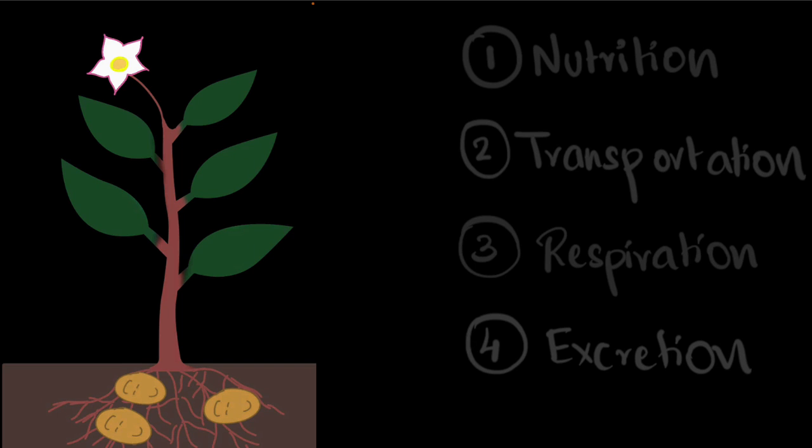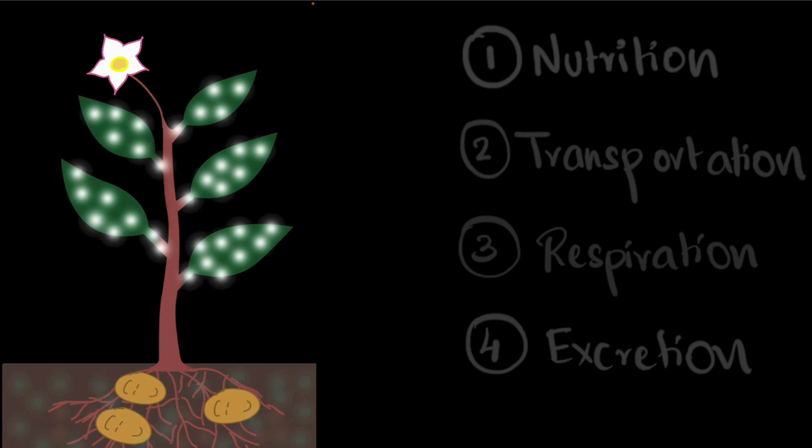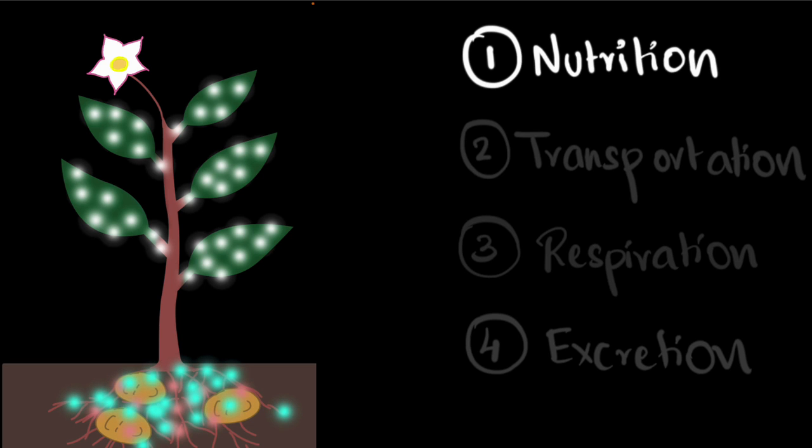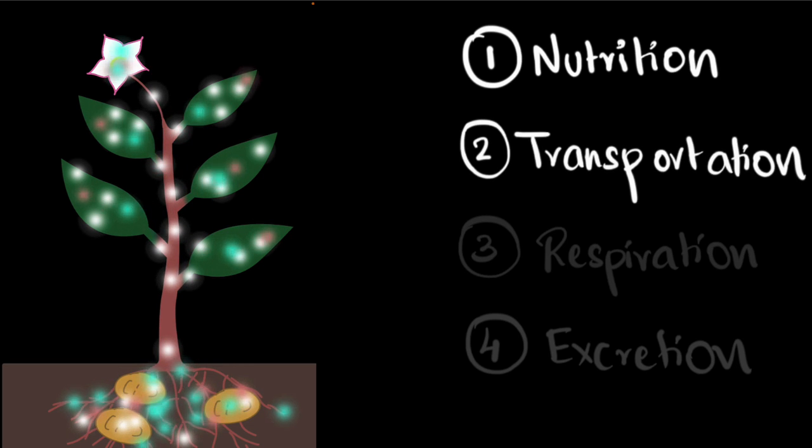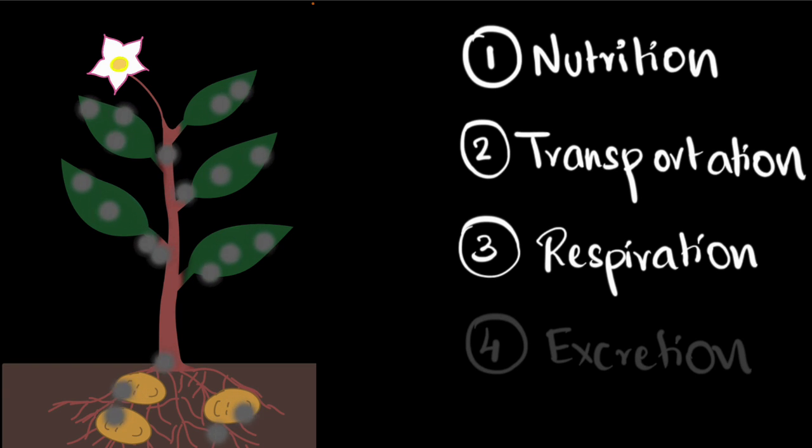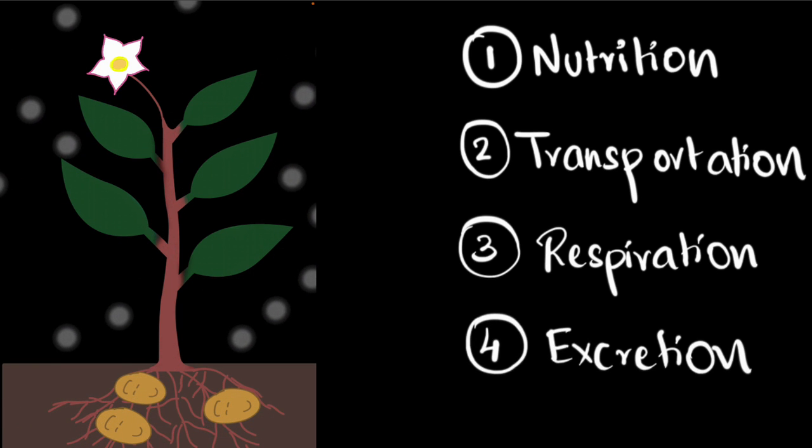The same is true for plants as well. For plants, they create their own food and absorb nutrients from the soil. So that's their nutrition. Then they transport that food to all the cells. The cells do respiration to break the food to get energy and some waste products. And finally, they throw these waste products out of their body.